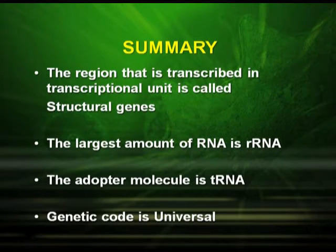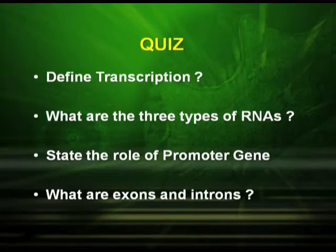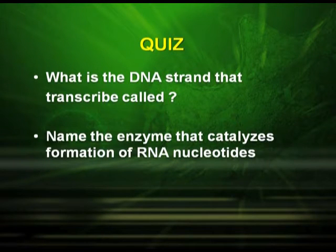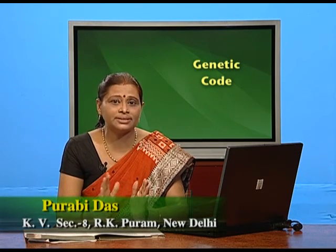Now let us have a summary of the topics. The region transcribed in a transcriptional unit is called structural genes. The largest amount of RNA is ribosomal RNA. The adaptor molecule is transfer RNA and the genetic code is universal. Quiz questions: Define transcription. What are the three types of RNAs? State the role of the promoter gene. What are exons and introns? What is the DNA strand that is transcribed called? Name the enzyme that catalyzes formation of RNA nucleotides.